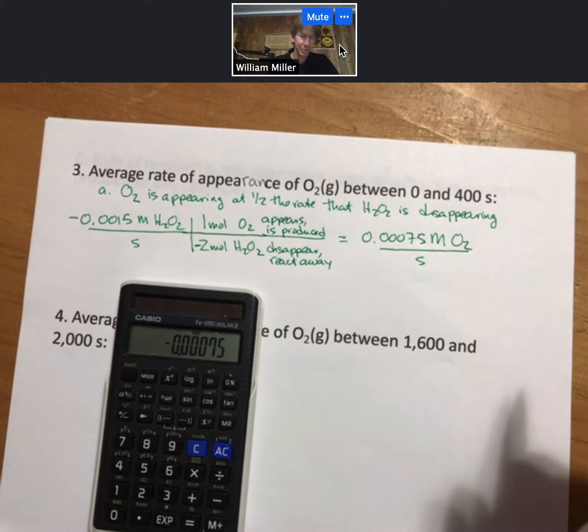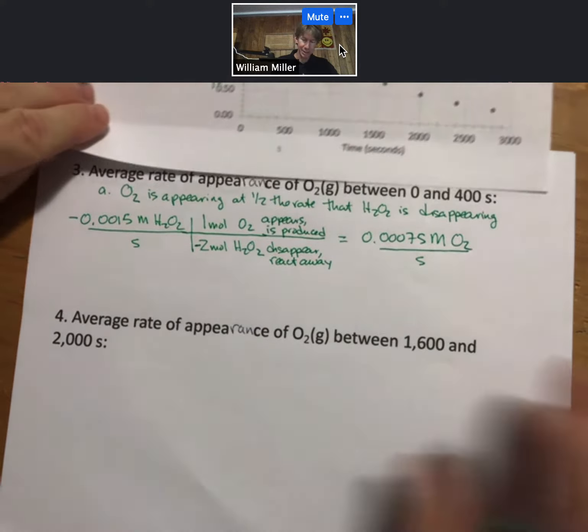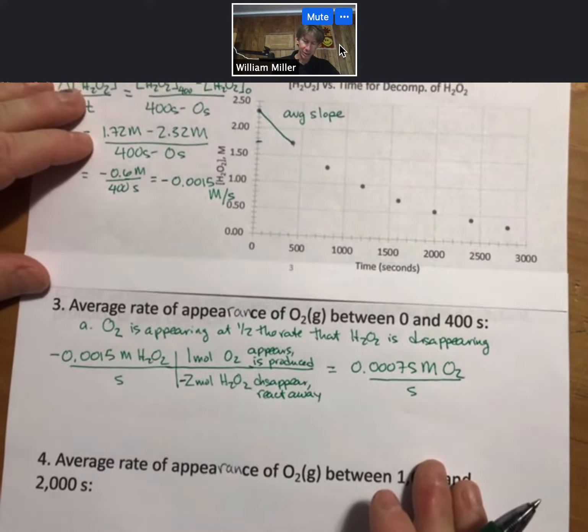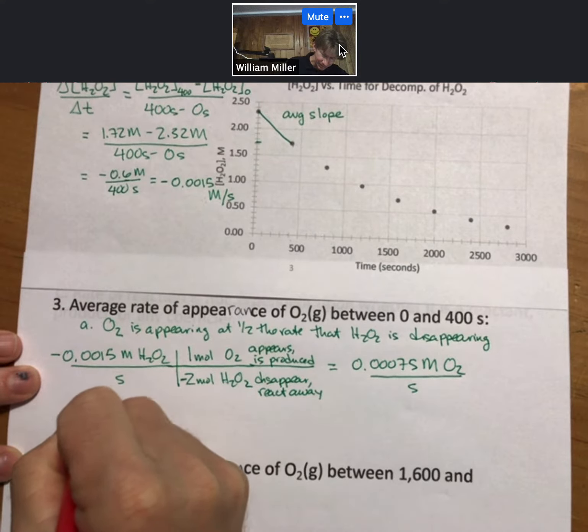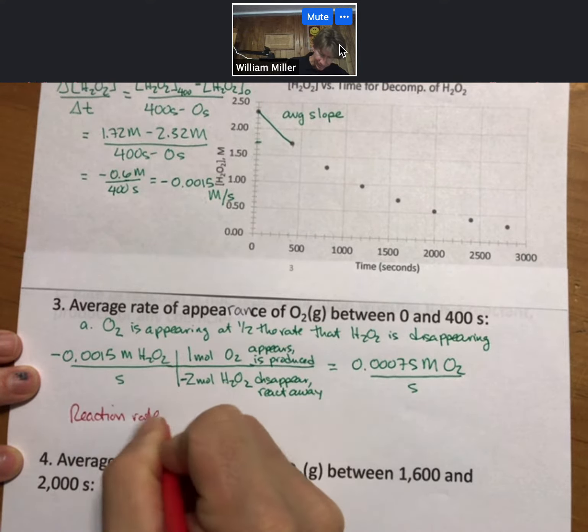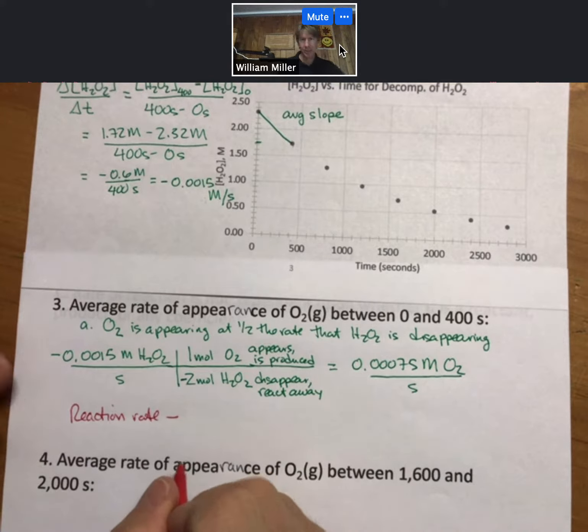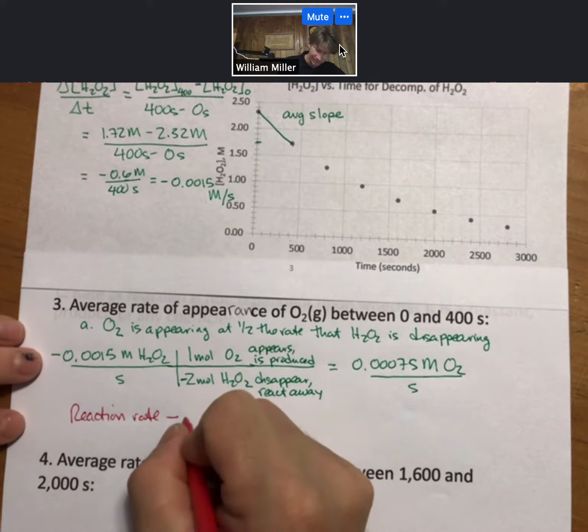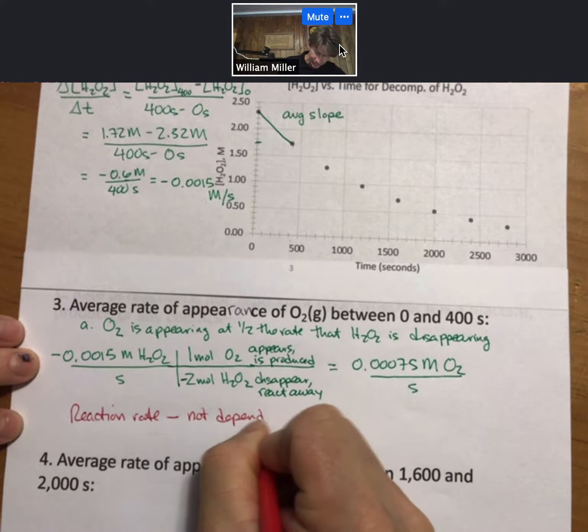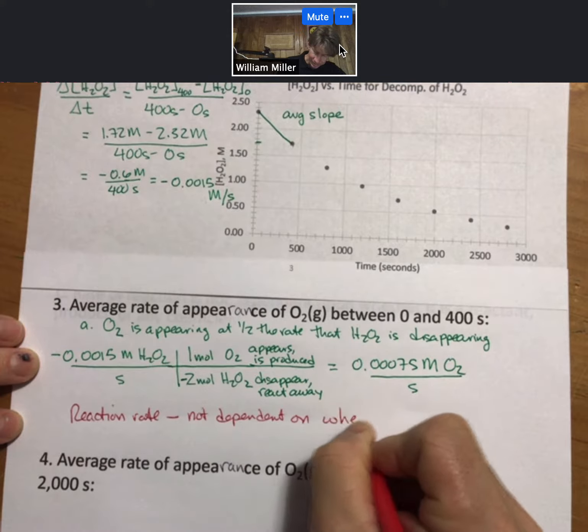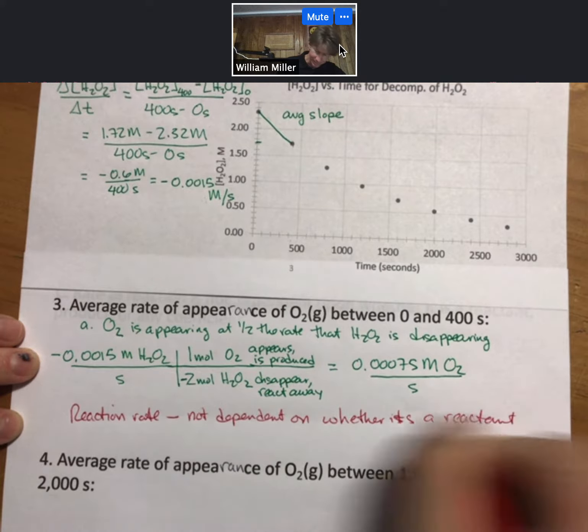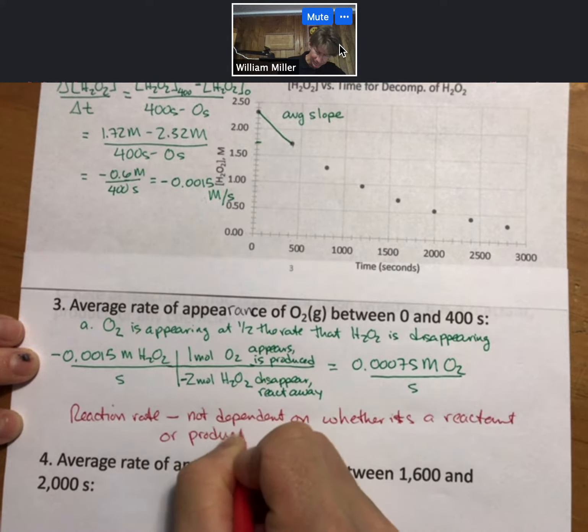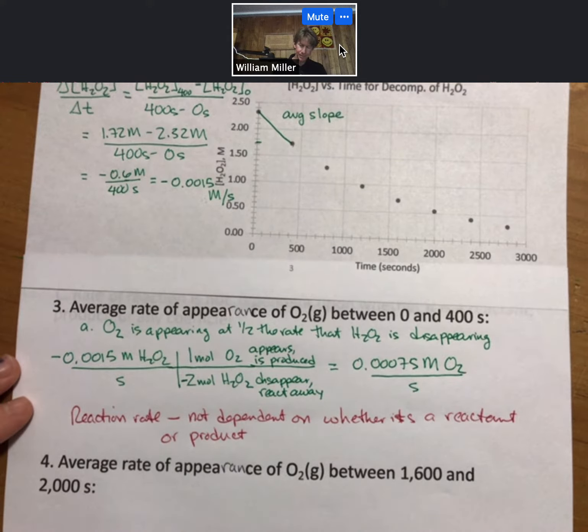So there's a little problem here. First off, and we'll deal with this in a minute. If we're going to actually talk about reaction rates in any coherent way, we want to make sure that for reaction rate, it is not dependent on whether it's a reactant or product.